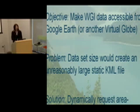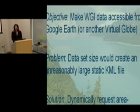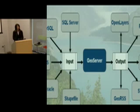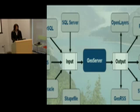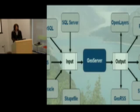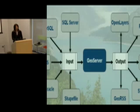We had to come up with a dynamic solution, because every time we update the World Glacier Inventory, we don't want to manually update the KML file — we want this done automatically. Our solution was to use GeoServer, which will dynamically request area-specific information. To get our World Glacier Inventory from our database into KML, we're using GeoServer. We're using PostGIS as our input — we've loaded all of the World Glacier Inventory data into this database, connected it to GeoServer, and GeoServer automatically creates the KML output for us.